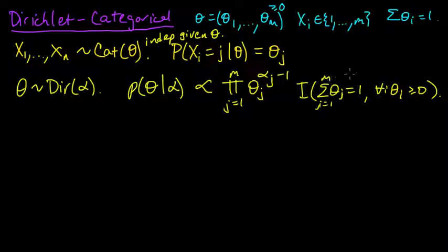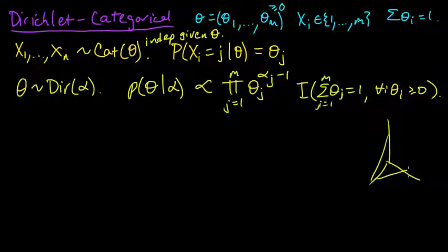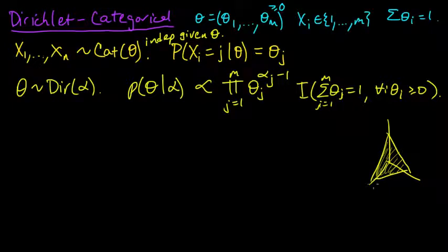So j goes from 1 to m, and this just says that the support of this distribution is the probability simplex. We can draw it in three dimensions — it's this sort of triangle, with axes theta_1, theta_2, theta_3. This triangle here is our setup.